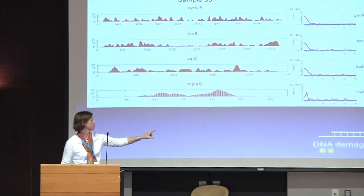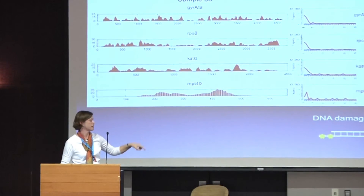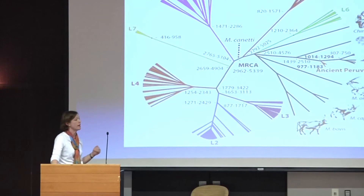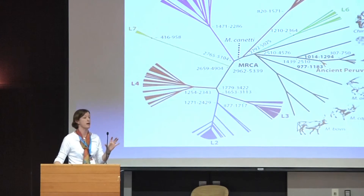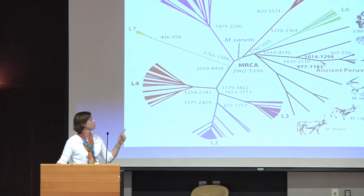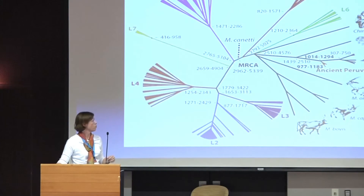We also see the very characteristic DNA damage patterns, which are sort of U-shaped — this reflects the overhangs that tend to be deaminated. So here were our results. Because we had radiocarbon-dated samples, we were able to calibrate the timing of the tree. And what we were very surprised to find is that the Peruvian tuberculosis genomes cluster with M. pinnipedi — TB strains found in southern hemisphere pinnipeds, seals and sea lions. So that was quite unexpected.